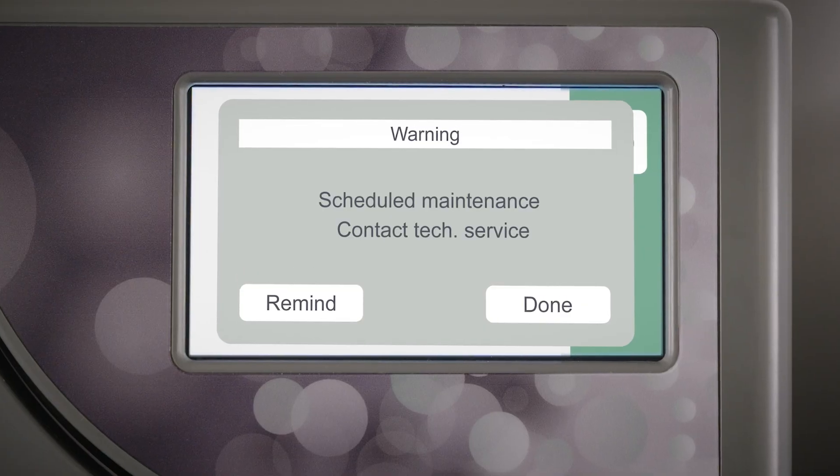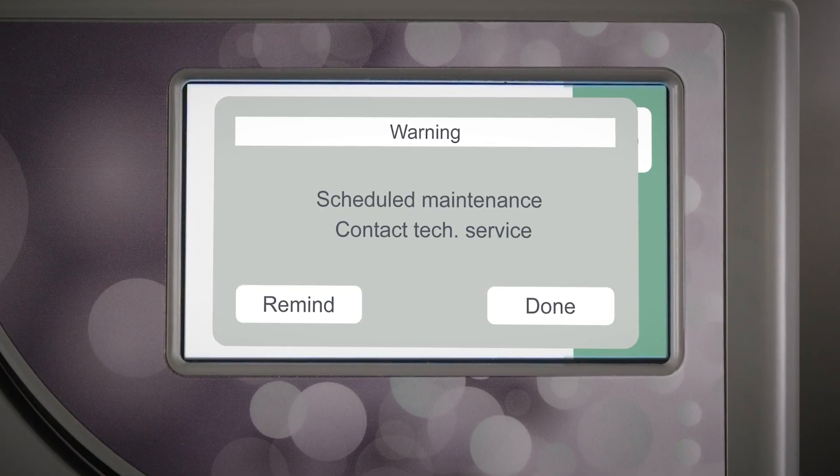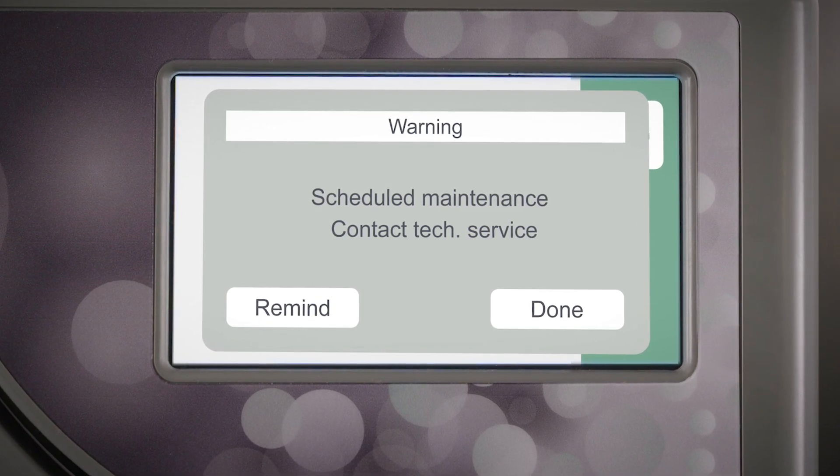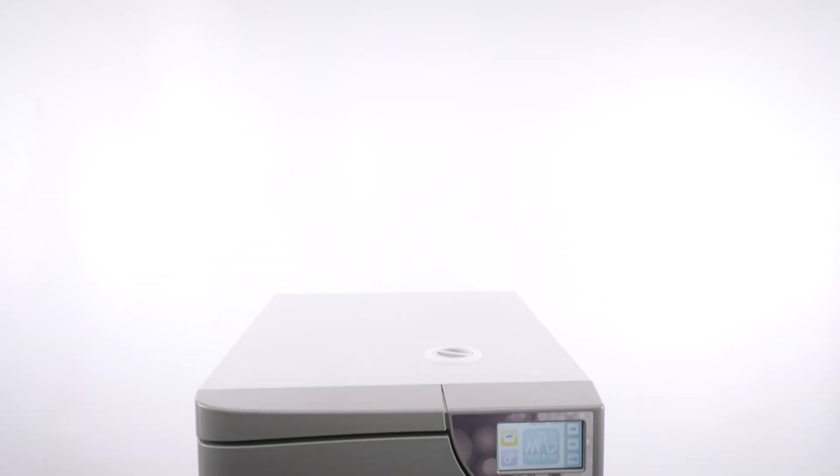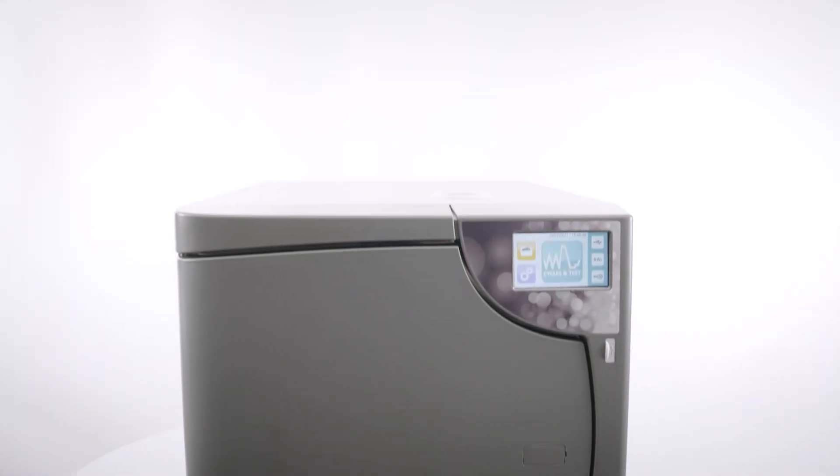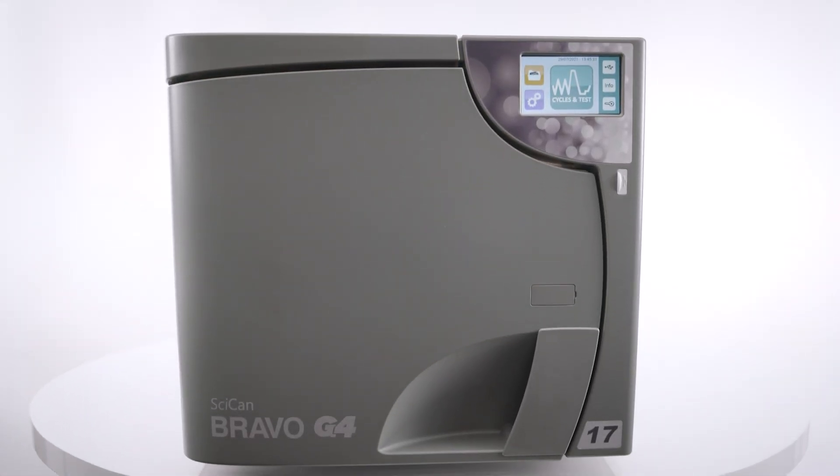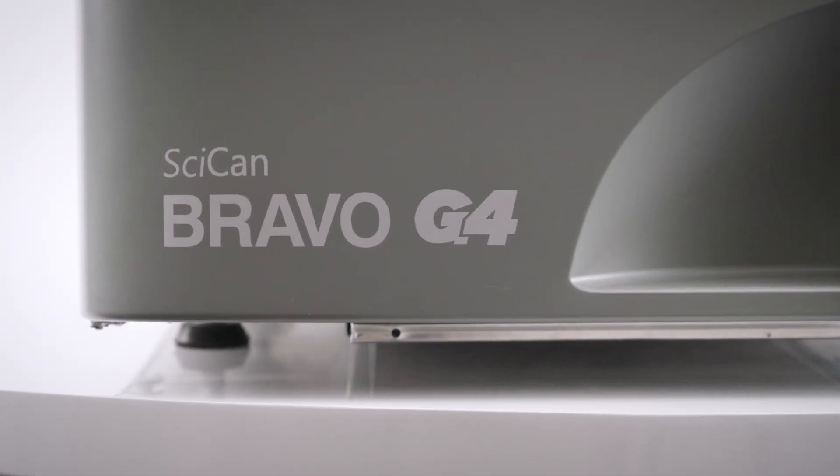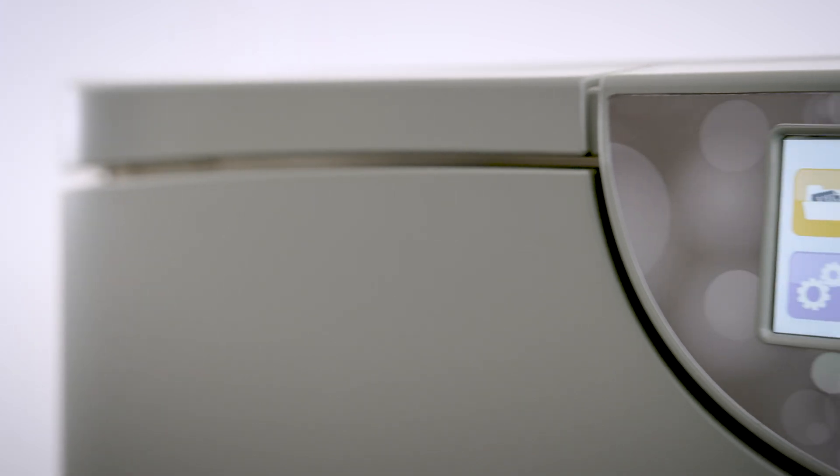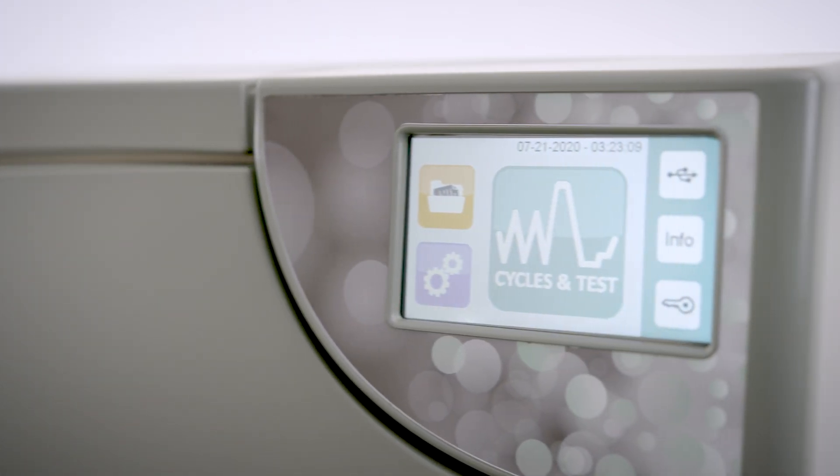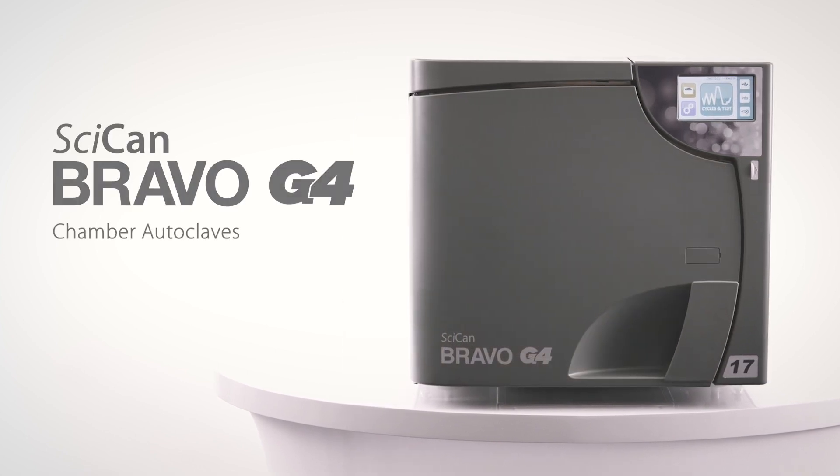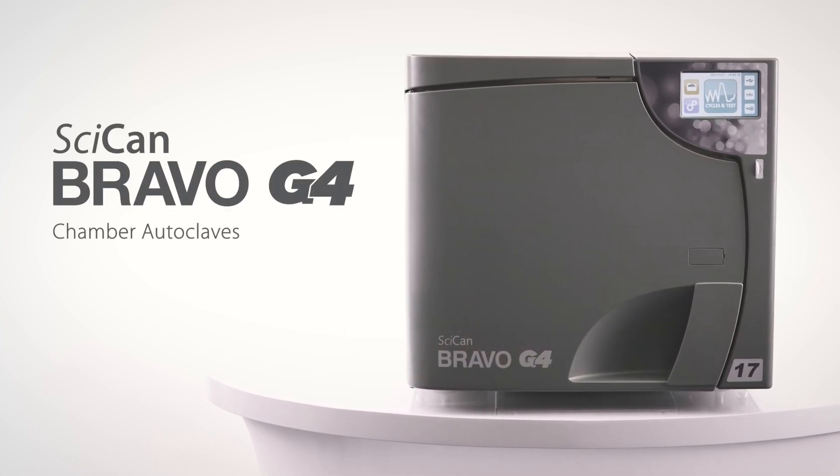The Bravo G4 will also display an automatic maintenance warning message for general service every 3000 cycles, which is roughly every three years. Additional details about installing, operating, and maintaining your SCICAN Bravo G4 are all contained within the operator's manual. Please read these instructions before operating this unit and keep them for future reference. Thank you again for making the SCICAN Bravo G4 part of your sterilization upgrade.